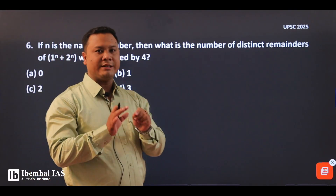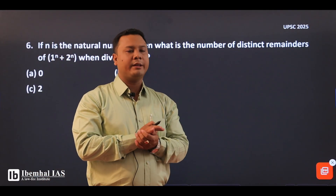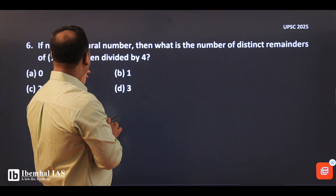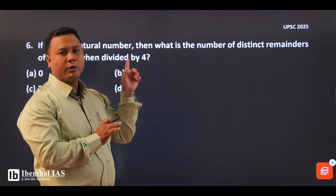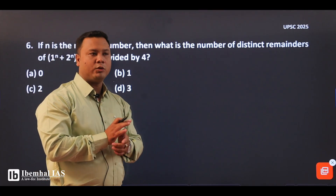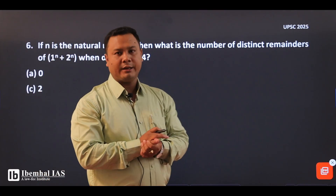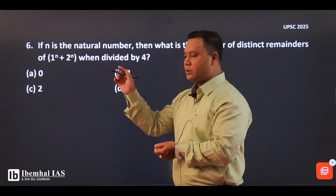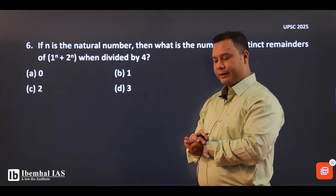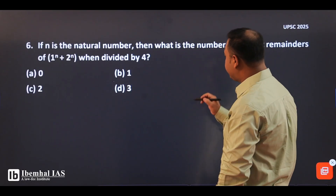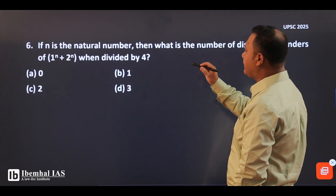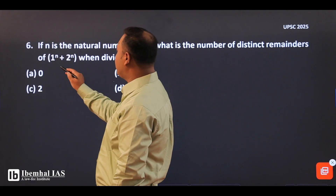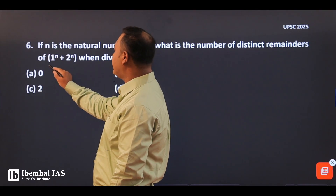Distinct remainder — what is the number of distinct remainders? So 1 to the power of n and 2 to the power of n divided by 4. What is the number of distinct remainders here? 1 to the power of n and 2 to the power of n.